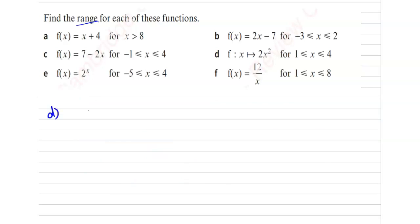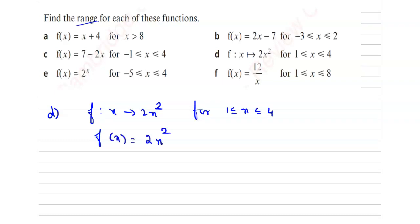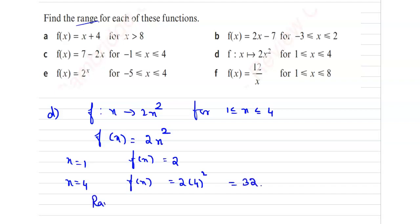Fourth one: f of x equal to 2x squared for 1 less than or equal to x less than or equal to 4. Now take x equal to 1. So, f of x equal to 2. Take x equal to 4. So, f of x equal to 2 times 4 squared, which is 32. Hence, the range will be 2 less than or equal to f of x less than or equal to 32.